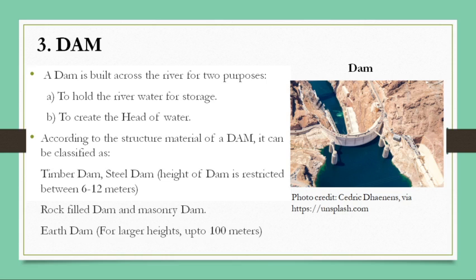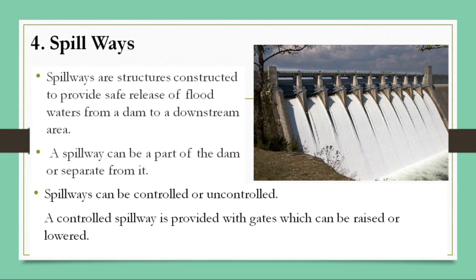The fourth component is spillways. Spillways are structures constructed to provide safe release of floodwaters from the dam to the downstream areas. Every reservoir has a capacity to store water, and if a flood occurs, water in the reservoir can top up. To control the flow of water, spillways are constructed. A spillway can be a part of a dam or separated from it. Spillways can be controlled or uncontrolled — a controlled spillway is provided with gates which can be raised or lowered based on conditions.